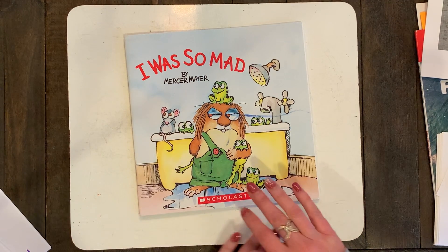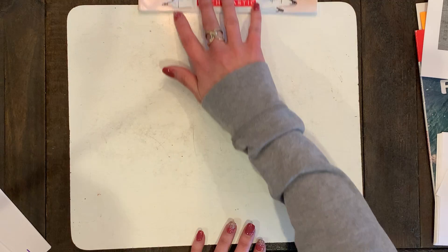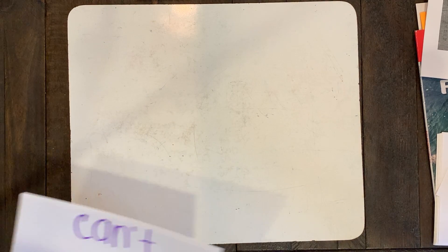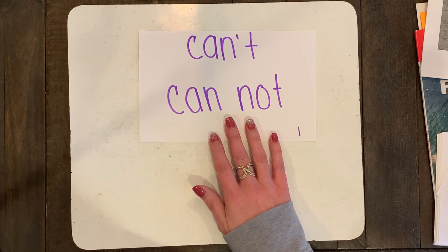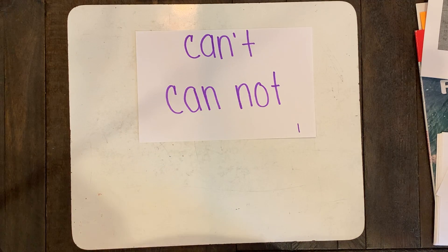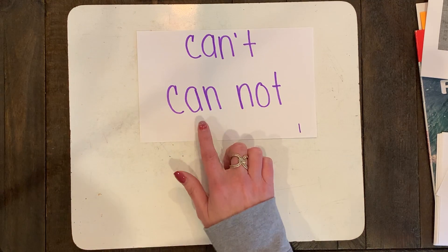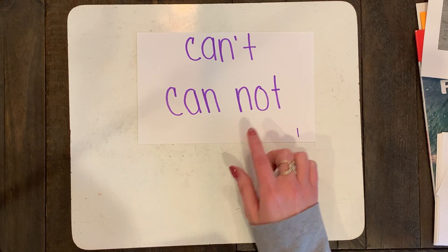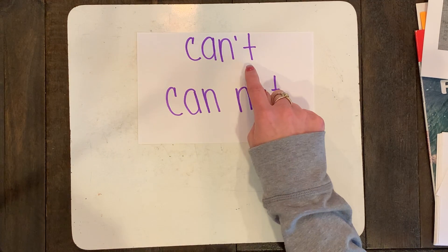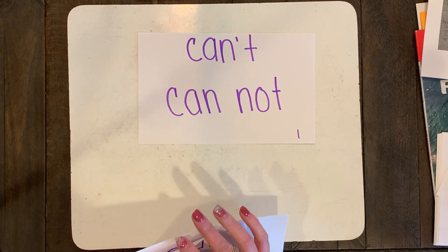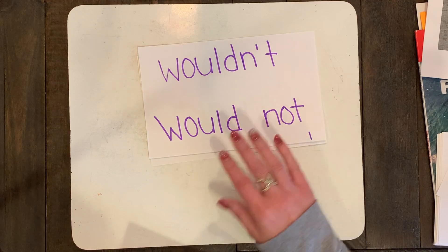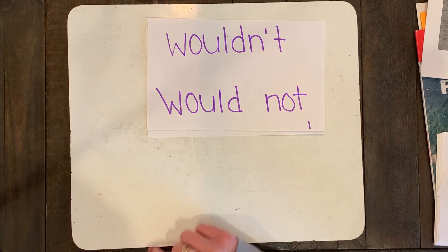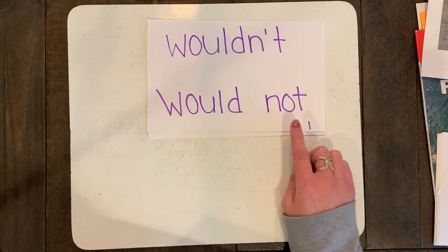Before we get started actually reading the book, I am going to talk to you about something that you guys know and can read very well. I just want to remind you — these are called contractions. Contractions are two words, like "can" and "not," that are shortened and become "can't." The next contraction you're going to see in this book is "wouldn't," which is made from "would not."